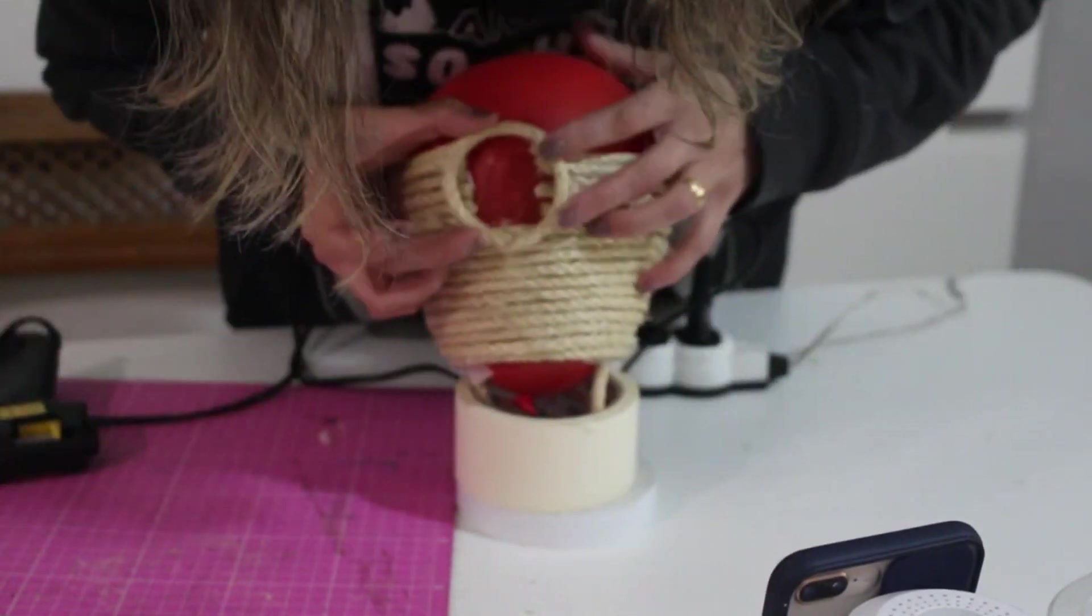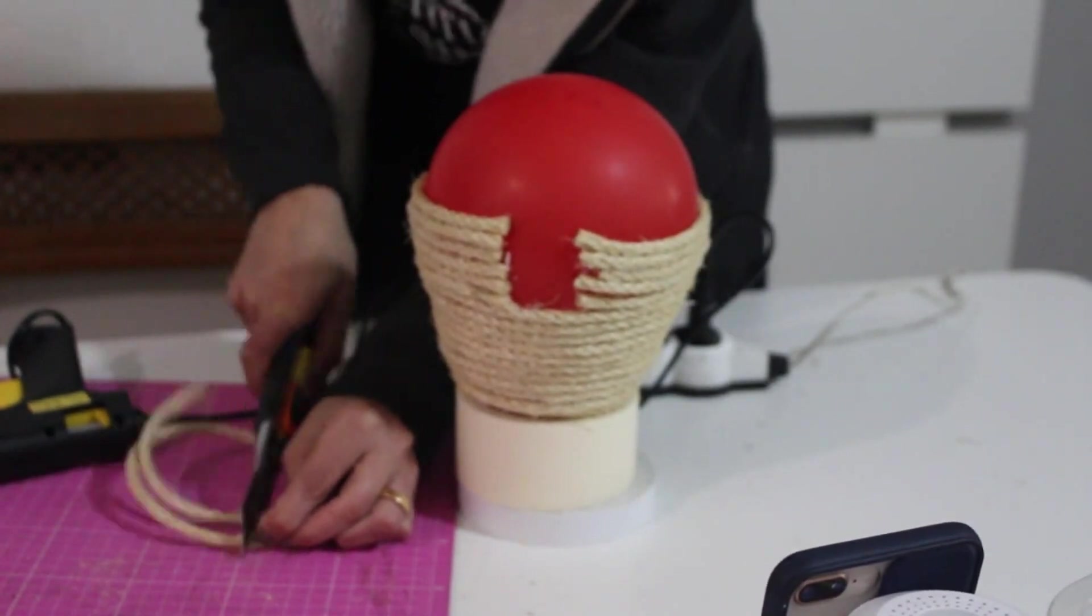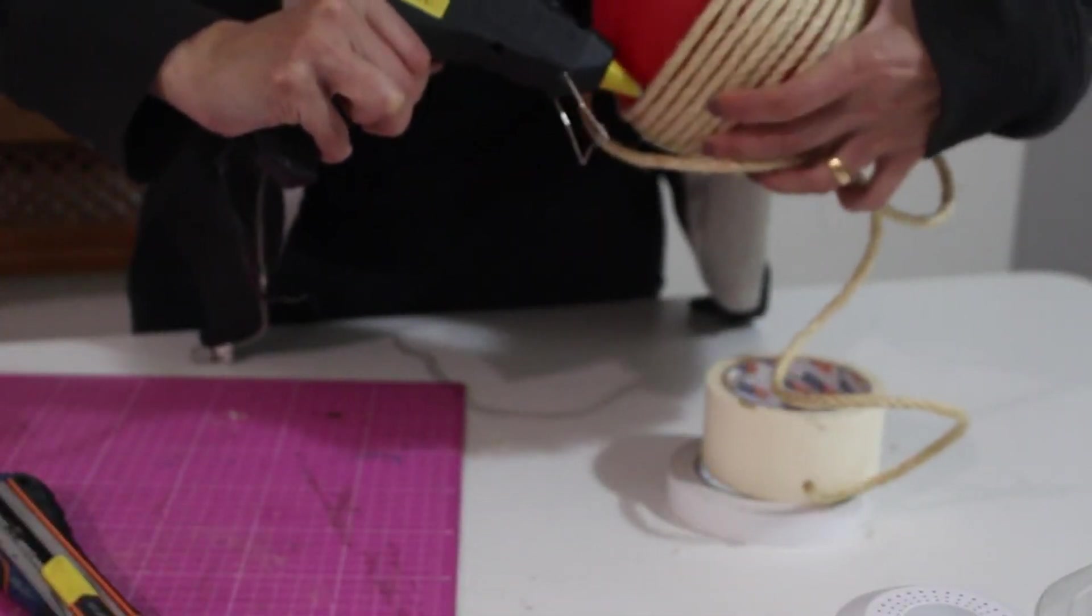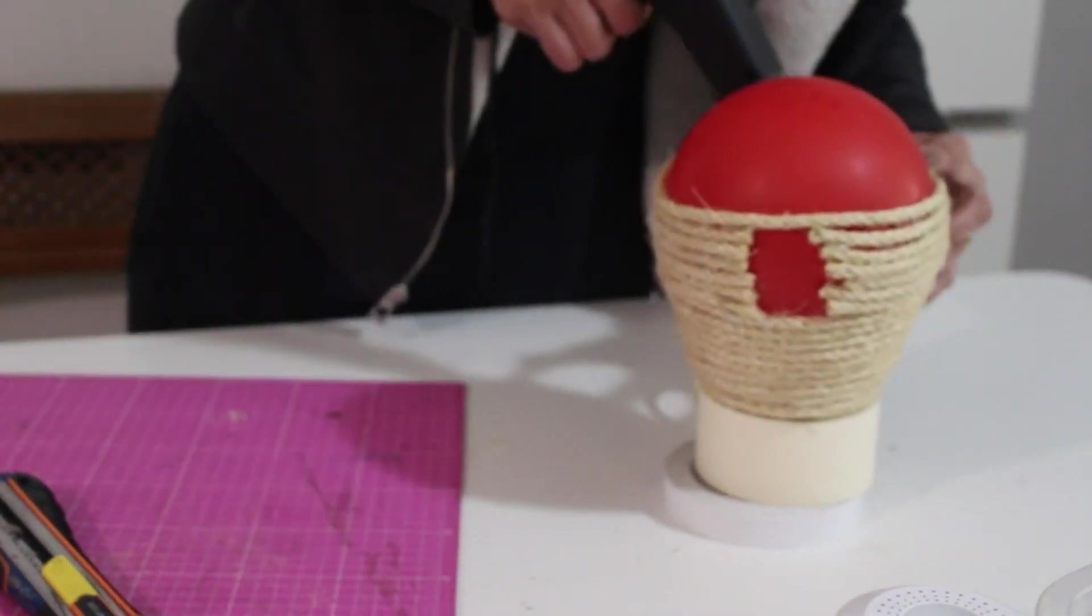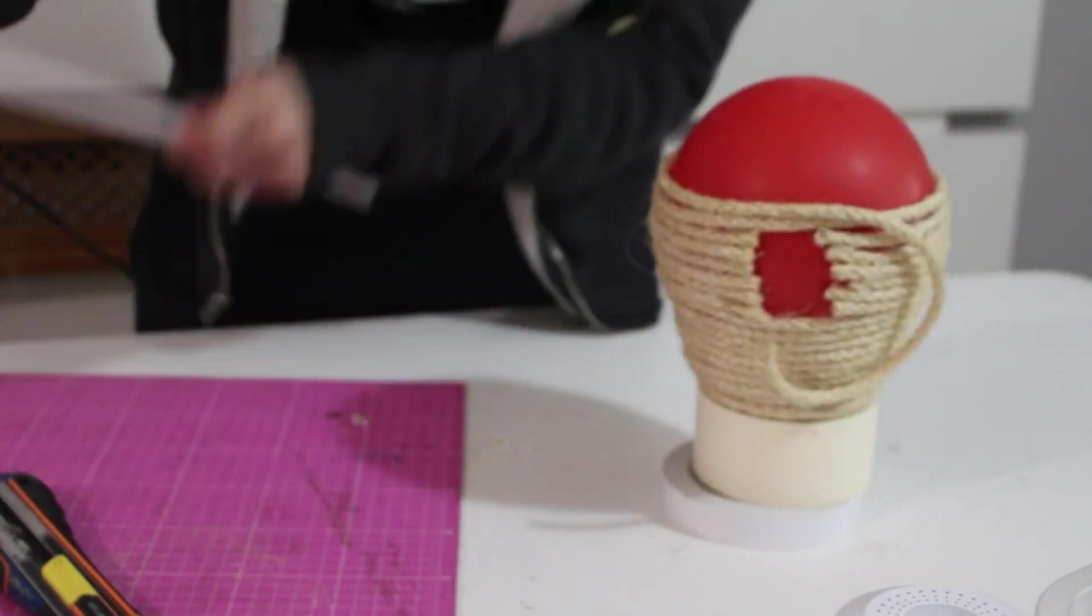And now don't forget to burst your balloon. Once you've burst your balloon, it's possible that the glue will stay stuck to the balloon. So to get the balloon out if it's stuck inside, you just need to use a hairdryer and it will come nicely unstuck. There's a good tip for you.